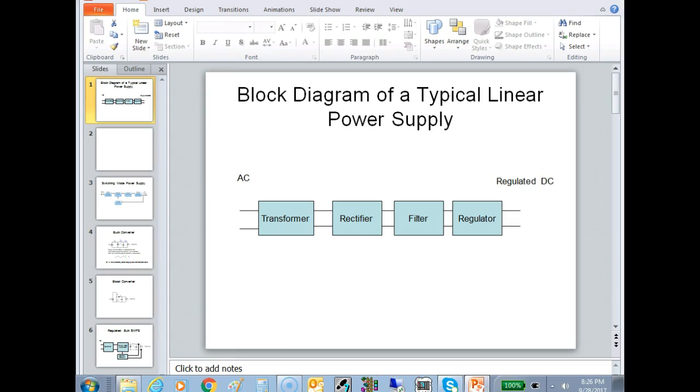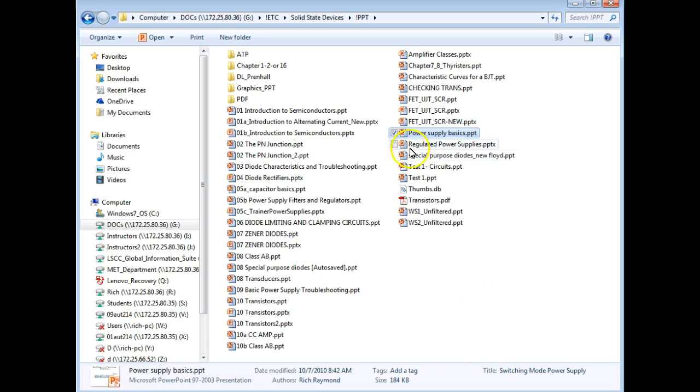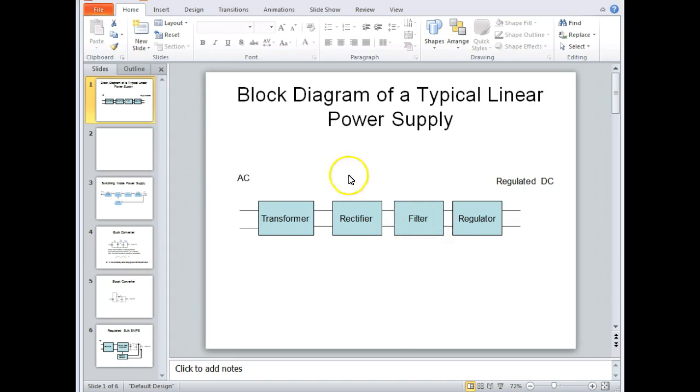Another thing that I wanted to make sure y'all understood is that you're going to see on a test is this thing we call IZ Max. So when we look at our data sheets, the knee current is given, but the maximum current is not given.